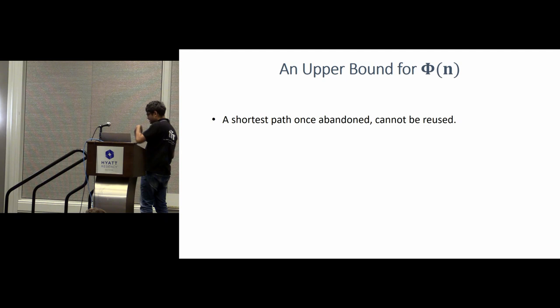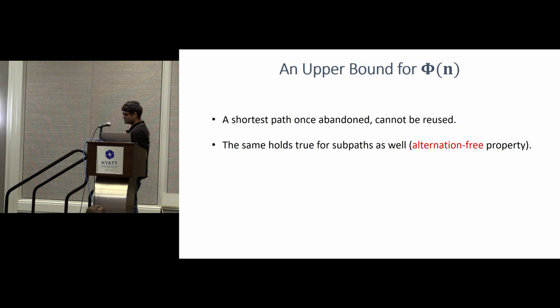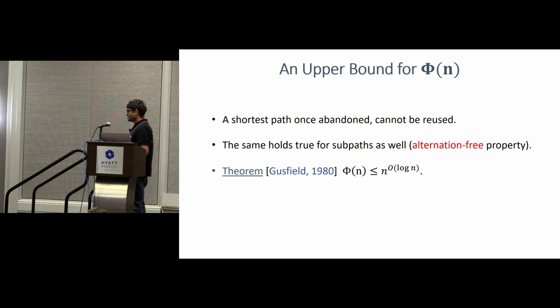So what was already known, let's see at known results. So, the first basic thing is what I explained earlier, is that a shortest path once abandoned cannot be reused. So once P2 replaces P1 as a shortest path, no time in the future will P1 ever come back. And this property is true not just for ST paths, but also for XY paths, where X and Y are just any pair of vertices in the graph. This property is known as the alternation-free property. And using this property in the year 1980, Daniel Gusfield proved that phi of n is at most n raised to log n.